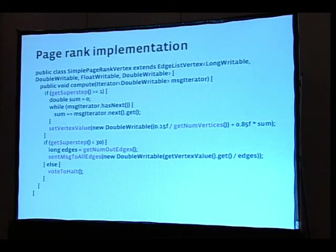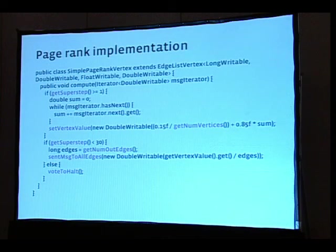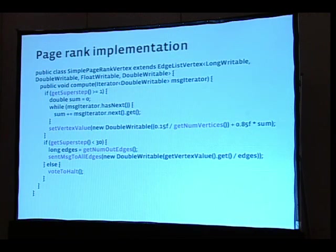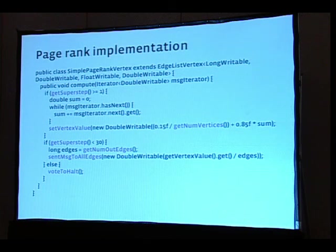We also have a page rank implementation, which is probably the most commonly discussed Giraph example and is very simple to implement. In super step zero we send our initial page rank value across outgoing edges. In subsequent super steps we take the page rank values sent to us, sum them, apply a damping factor to create our new page rank value, and repeat. For a halting condition you could say halt when your vertex value didn't change much within some tolerance; for simplicity I just say halt when we hit 30 super steps.